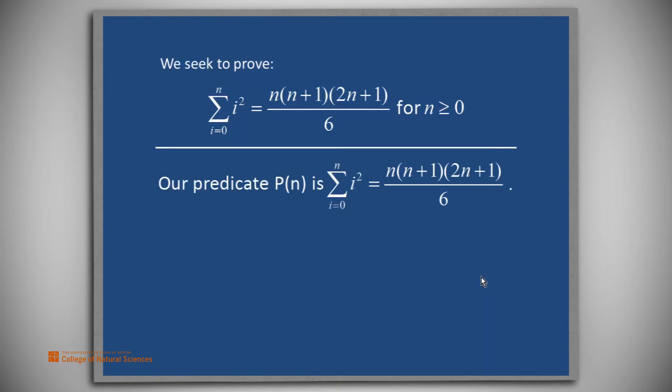In this case, we will declare our predicate P(n) to be that the summation from i equals 0 to n of i squared is equal to n times (n+1) times (2n+1) over 6.